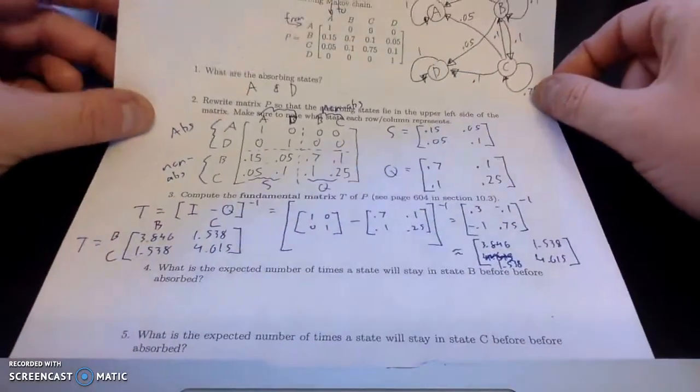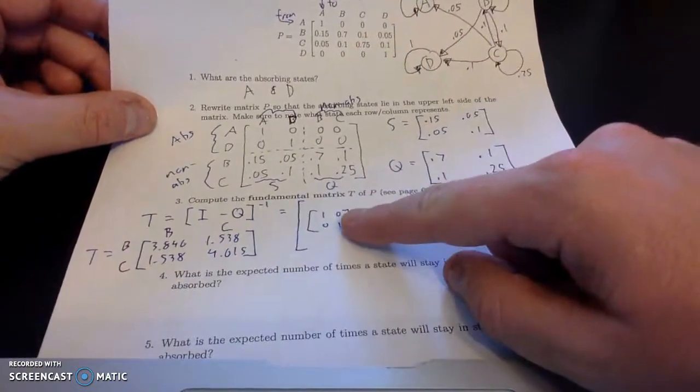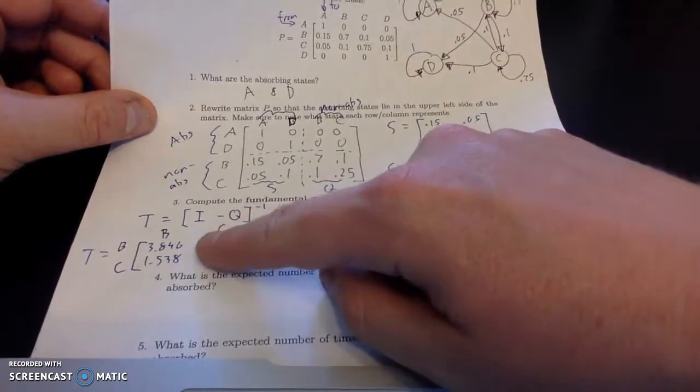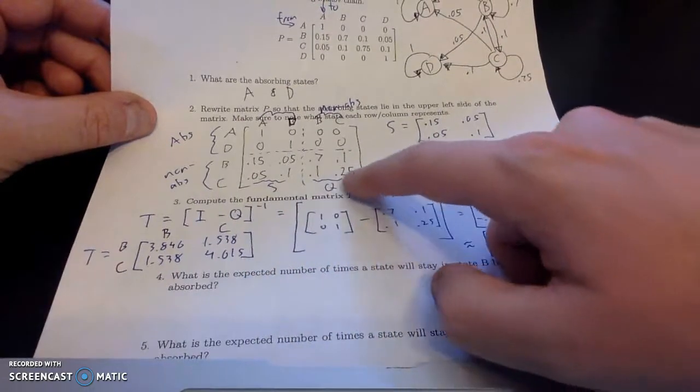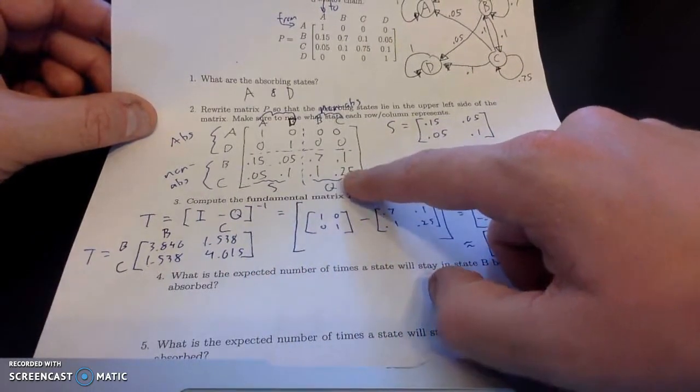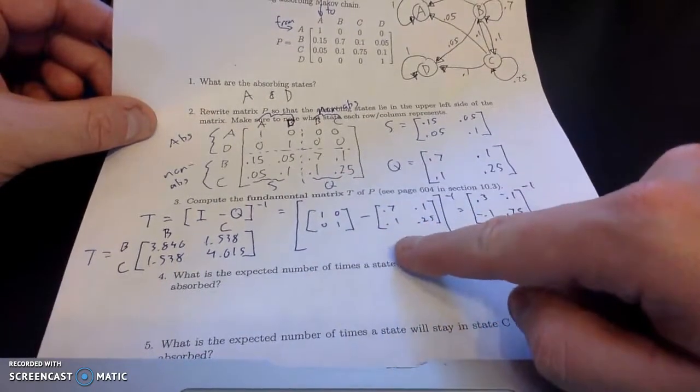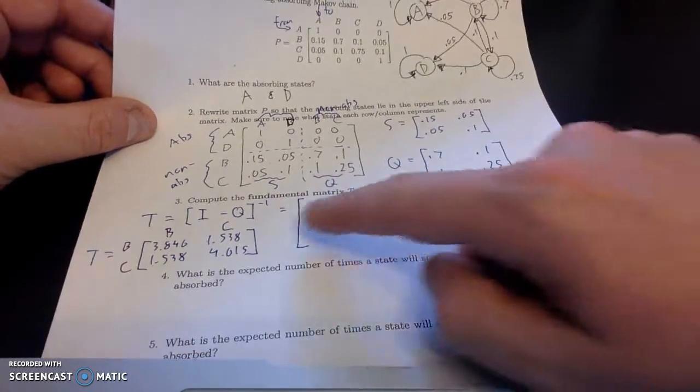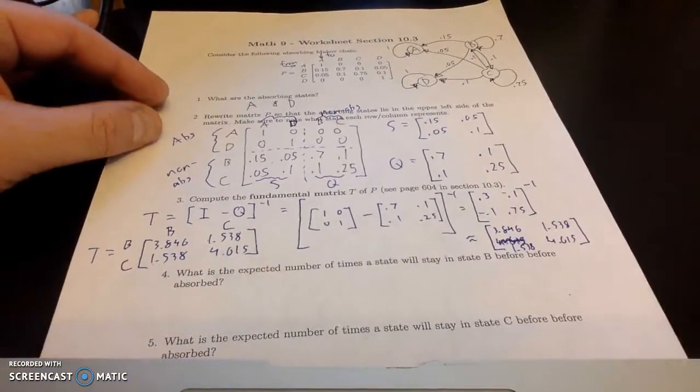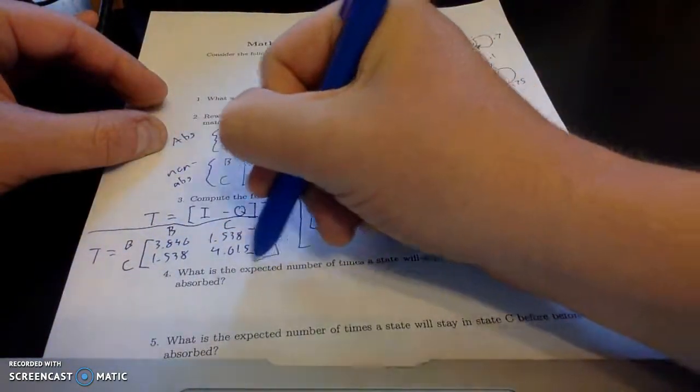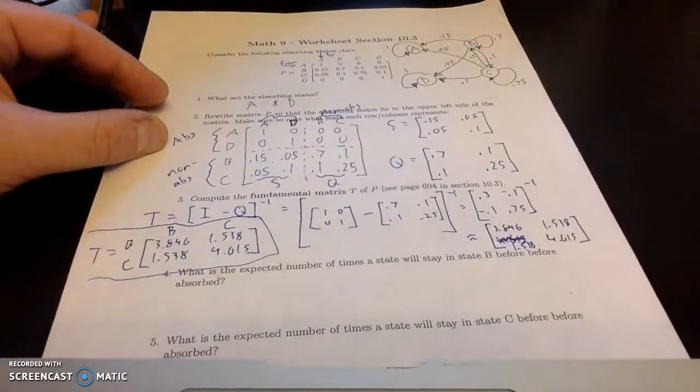So we finished up last video computing this fundamental matrix T of the transition matrix P, the identity minus Q, and Q is kind of the bottom left of the rewritten transition matrix. Do the identity minus Q, then take the inverse in your calculator or software. And then we've got this right here. So I'm going to kind of partition this off.